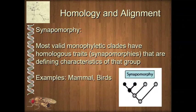We call a feature that is common to all descendants of an ancestor a synapomorphy. Technically, a synapomorphy is a derived ancestral trait that is shared between two or more species. Make a note of that definition: a derived ancestral trait that is shared between two or more species — that is a synapomorphy.